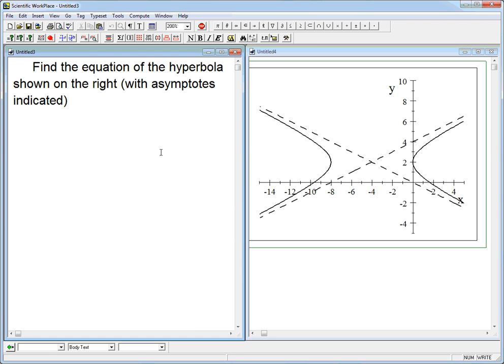Let's find the equation of a hyperbola, a shifted hyperbola from its graph. This should be pretty quick. It's intended to be a straightforward example.